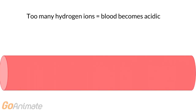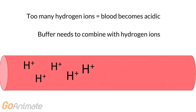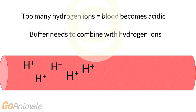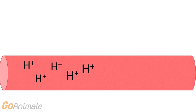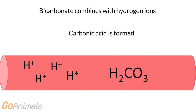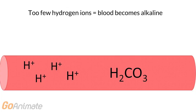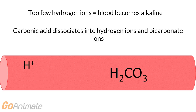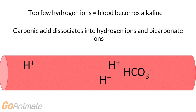If there are too many hydrogen ions, or an increase in hydrogen ion concentration in the blood, the bicarbonate ion combines with the hydrogen ion to form carbonic acid. If there are too few hydrogen ions, or a decrease in hydrogen ion concentration, carbonic acid dissociates into hydrogen ions and bicarbonate ions, thereby increasing the hydrogen ion concentration.